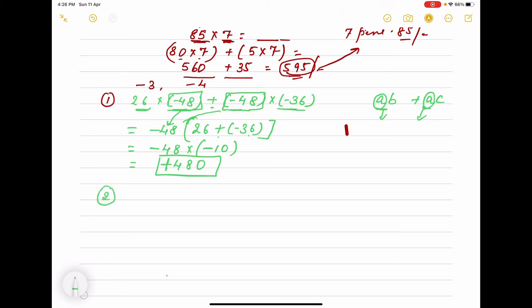Second question I am taking, take some different color so that 625 into minus 35 plus minus 625 into 65. Now tell me which number is common. I can take 625 and 625 both are common. Here both are present here and here both. So 625 I am taking common but you remember either you taking 625 or you are taking minus 625.